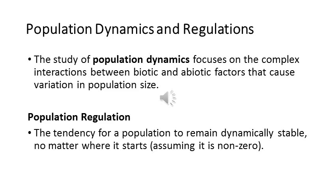To start the discussion about population dynamics and regulation, we will first define these two terms. We know that an ecosystem is composed of biotic and abiotic components. These two types of components affect every population in that ecosystem. The study of population dynamics focuses on the complex interactions between biotic and abiotic factors that cause variation in population size, which may be affected by other animal and plant species as well as environmental factors.